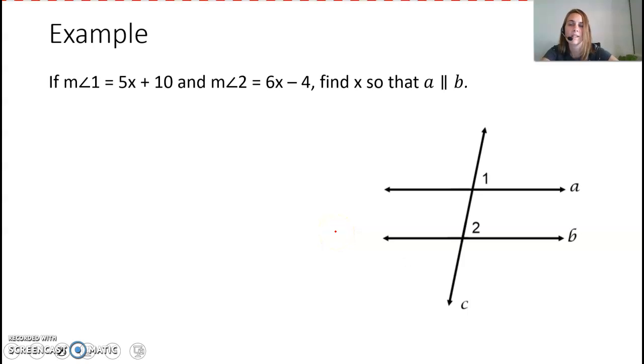If measure of angle 1 equals 5x plus 10 and measure of angle 2 equals 6x minus 4, find x so that a is parallel to b. So measure of angle 1 is 5x plus 10 and measure of angle 2 is 6x minus 4, and then we want these two lines to be parallel.